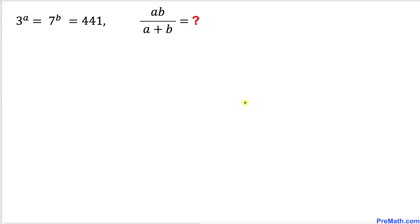Welcome to Pre-Math. In this video tutorial we have the exponential equation 3^a = 7^b = 441, and we are going to find the value of a times b divided by a plus b. Let's go ahead and get started with the solution.